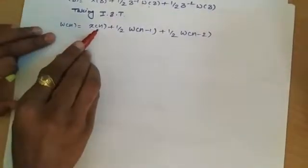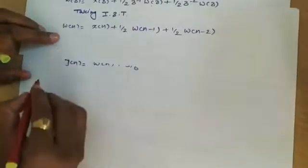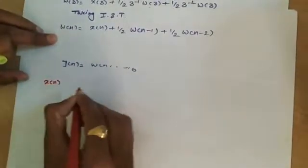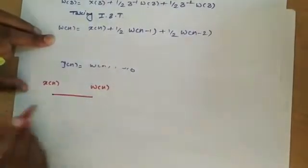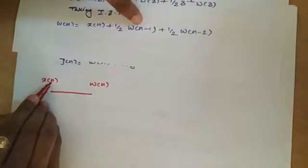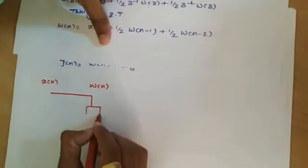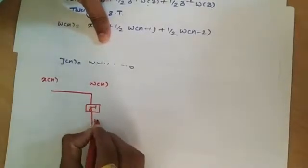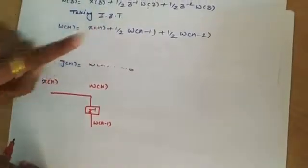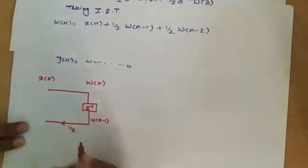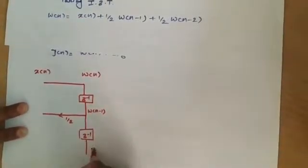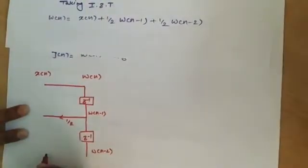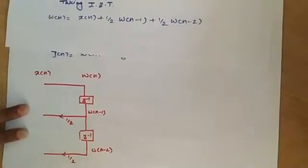Now we implement the Direct Form II realization. For the all-pole system, x(n) is the input and w(n) is the output. We draw w(n) = x(n) as the main line. We add a delay element z⁻¹ whose output is w(n−1), multiplied by coefficient 1/2. Then one more delay element z⁻¹ gives w(n−2), multiplied by +1/2.